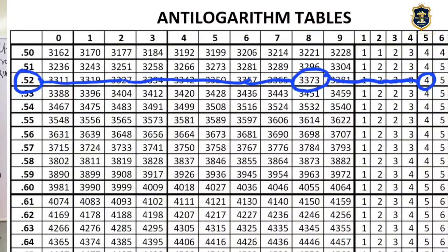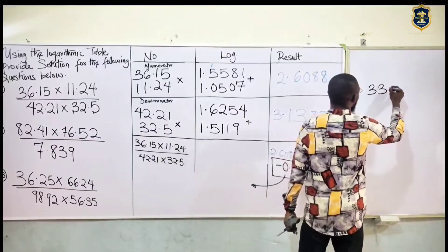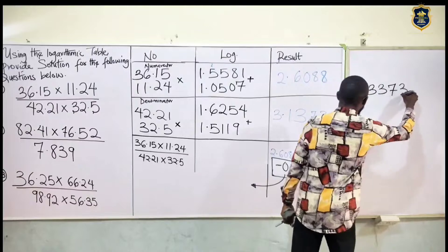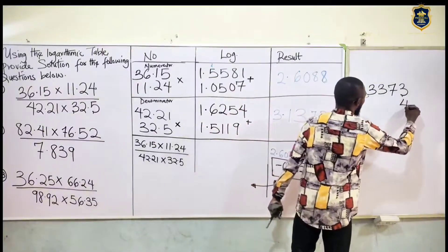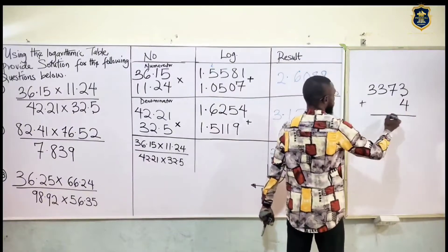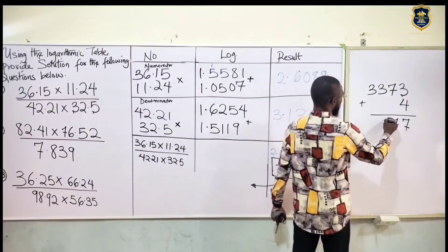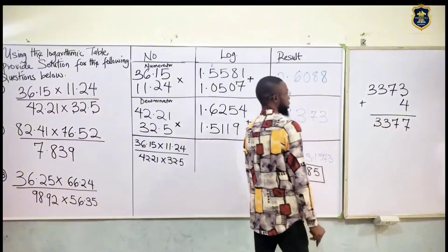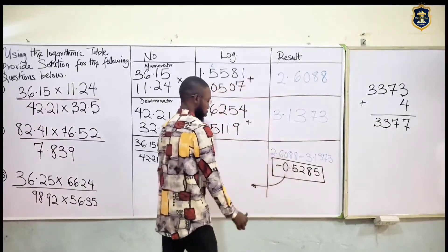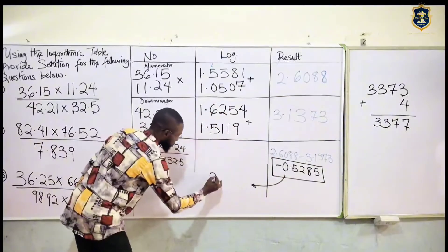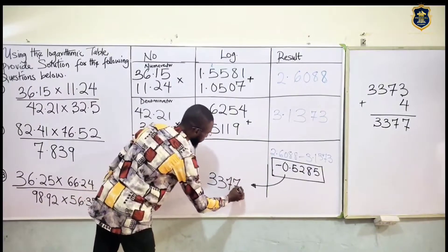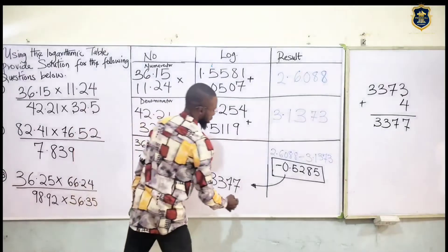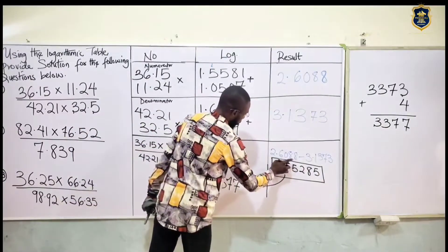We look for antilog of point 52 under 8, difference 5. Look at your log table — the antilog of point 52 under 8 is 3373. The difference of 5 should be what? You discover it is 4. When we add we get 7 here. So it's 3377.